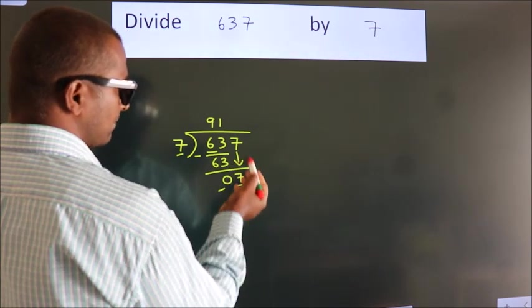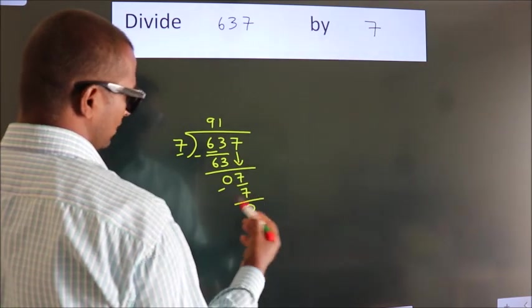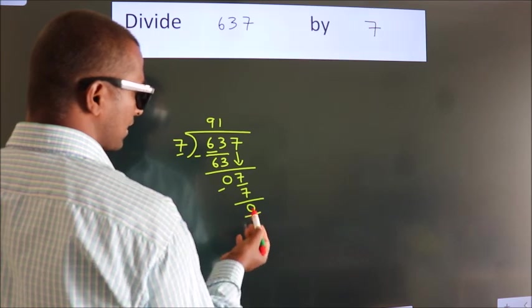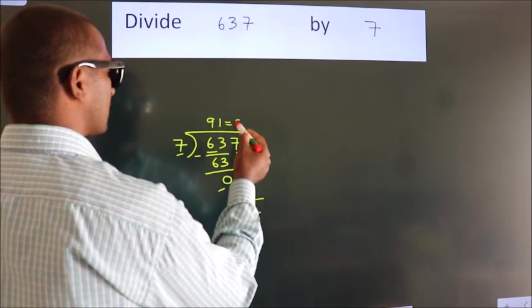After this, no more numbers to bring it down. And we got remainder 0. So this is our quotient.